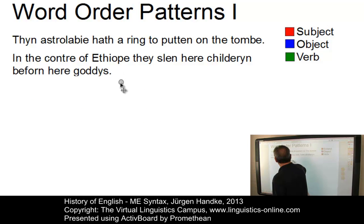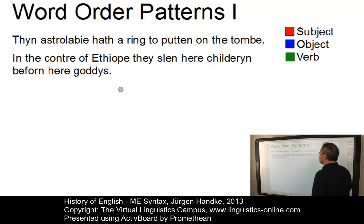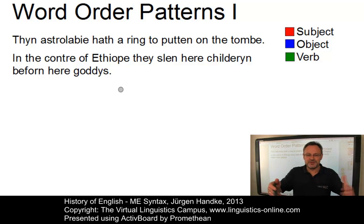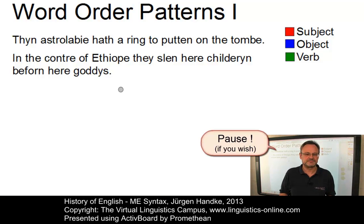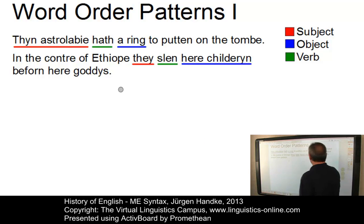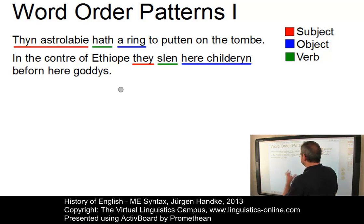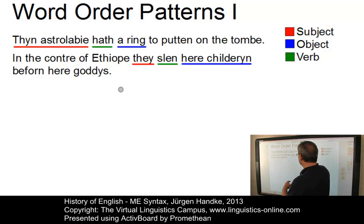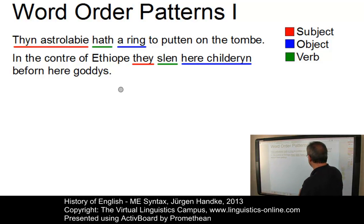Let's look at these central word order patterns used in Middle English. Perhaps you can try a syntactic analysis on your own — stop the video and compare your solution with mine. The word order in these two sentences was of course an SVO pattern. 'Fin astrolabi hath a ring to put in on the thumb' — 'fin astrolabi' is clearly the subject, 'hath' the verb, 'a ring' the object. And 'in the country of Ethiopia they slain here children before here goddesses' — again SVO: 'they' the subject, 'slain' the verb, 'here children' the object.